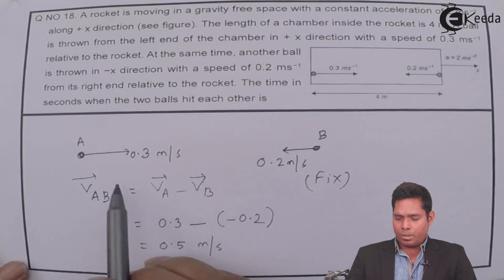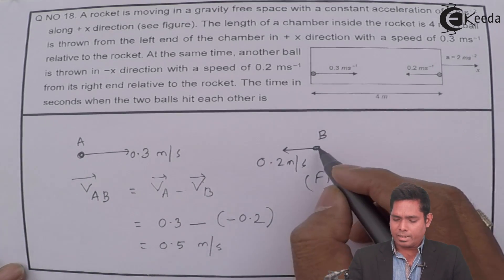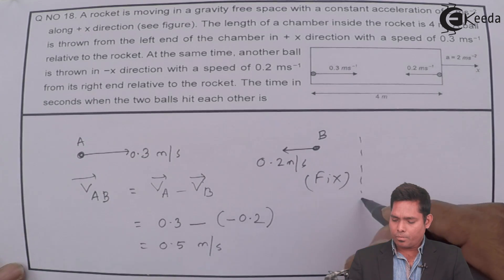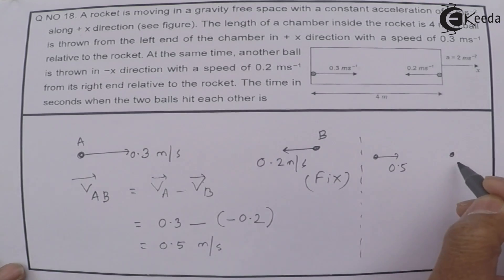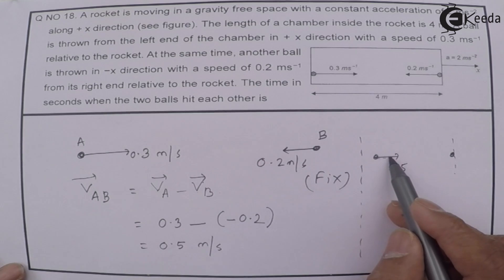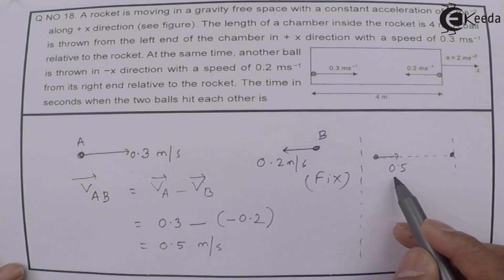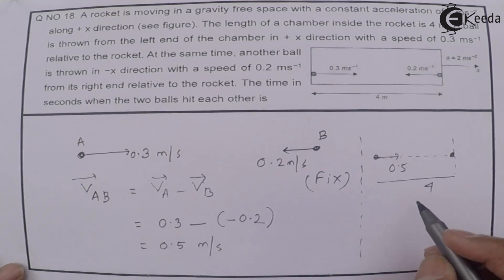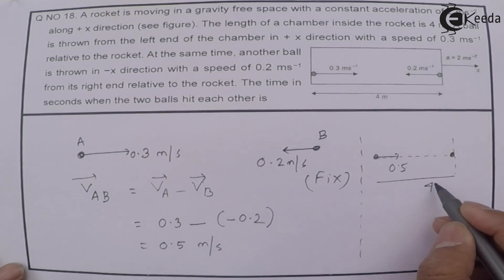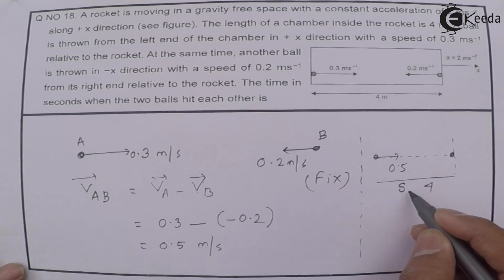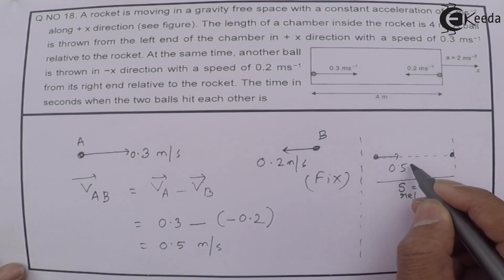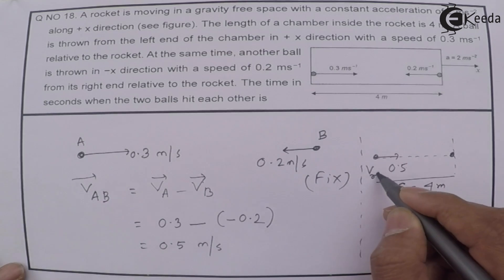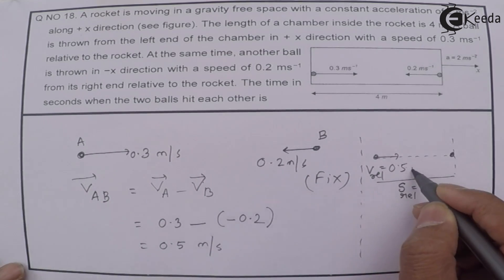That means the situation is equivalent to: A is moving with 0.5 m/s and B is at rest. The relative displacement is 4 meters and the relative velocity is 0.5 meter per second.